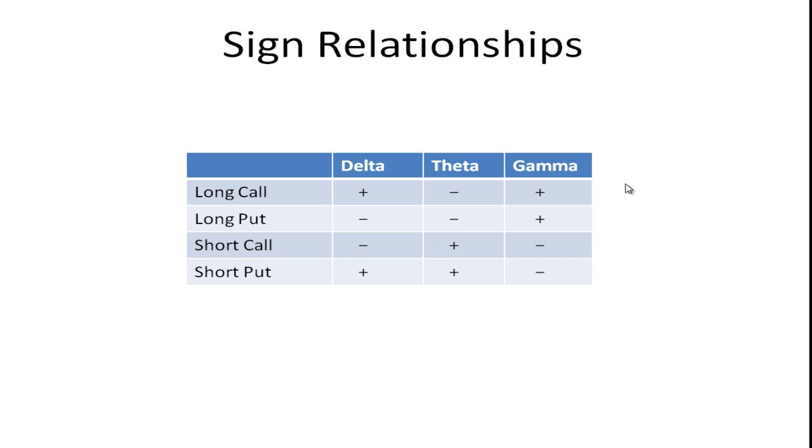Gamma. Gamma is positive for the call and for the put. Remember, this is the second derivative with respect to the stock price. And it's negative for short positions. And a good way to remember this, theta is easy to remember. So it has the opposite signs of theta. So positive up here, negative down here.